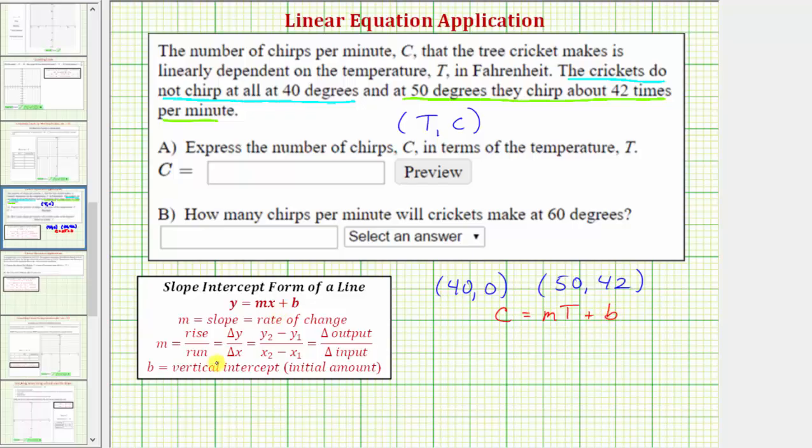If we can determine M, the slope, and B, the vertical intercept, we'll have our equation of C in terms of T. To find the slope given two points, we use this formula where the slope M equals the change of Y, which in this case is the change of C, divided by the change of X, which in this case is the change in T.